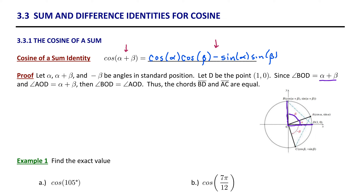Similarly, angle AOC also has a size of alpha plus beta. Since those two angles are equal, the chords that they represent are also equal. That is, chord BD opposite the angle of size alpha plus beta is equal to chord AC, also opposite the angle of size alpha plus beta.